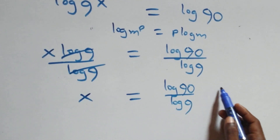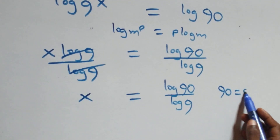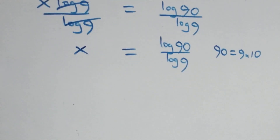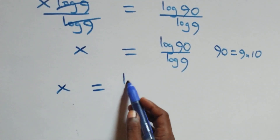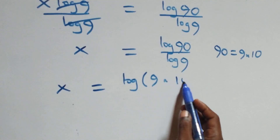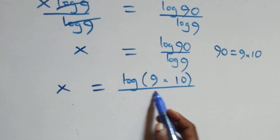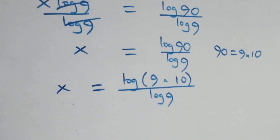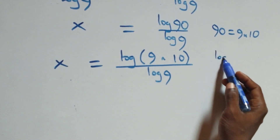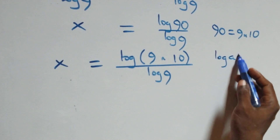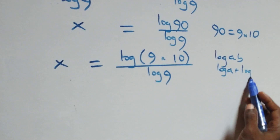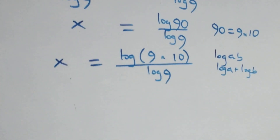In the next step, 90 can be expressed as 9 times 10. Then what we have here becomes x equals to log of 9 times 10 over log 9. We apply the rule that log a times b is the same thing as log a plus log b.